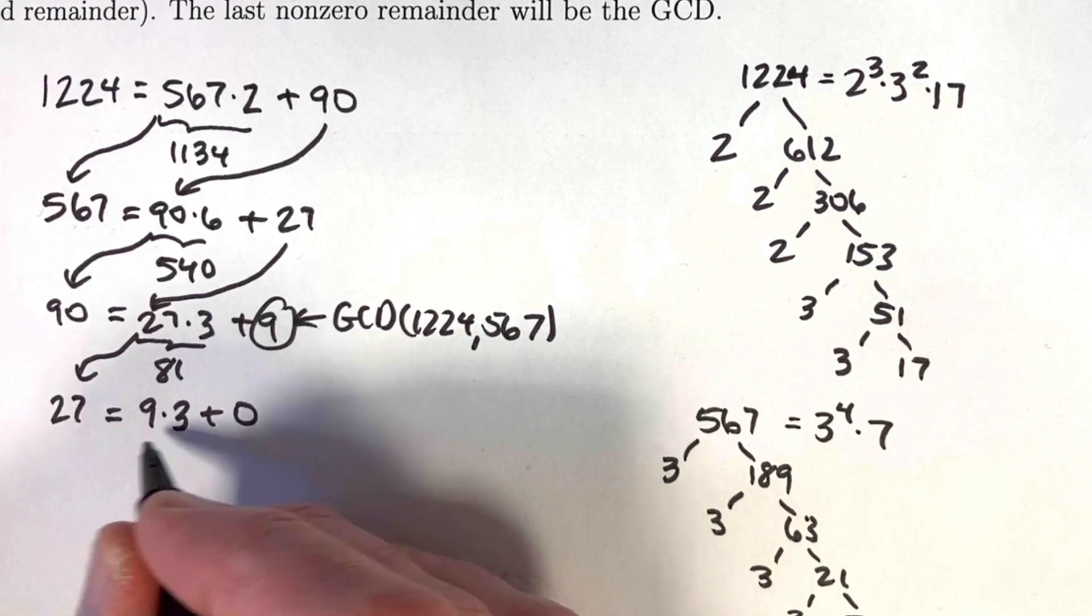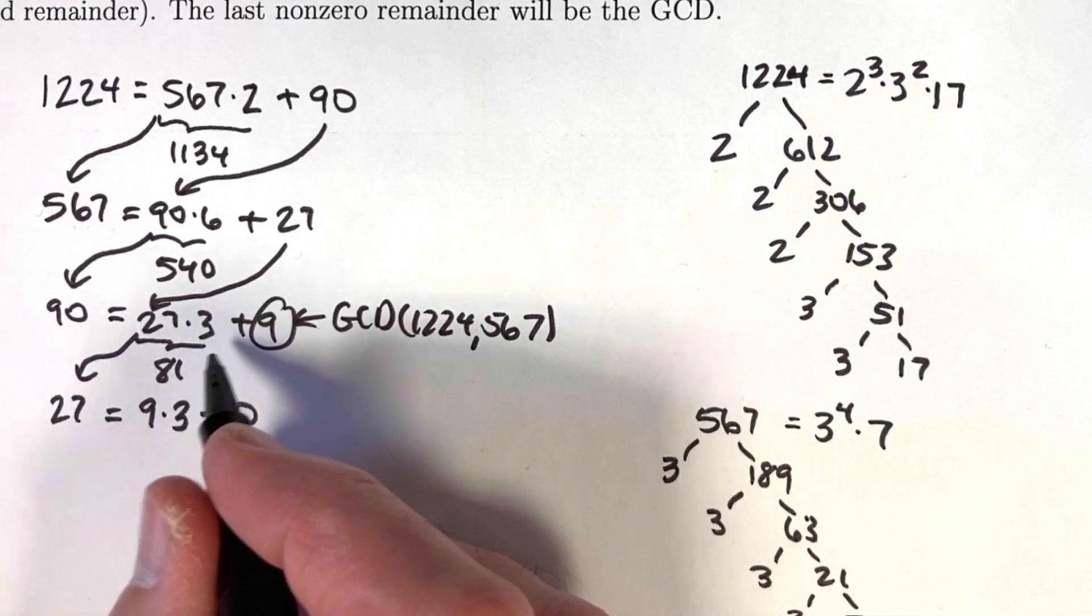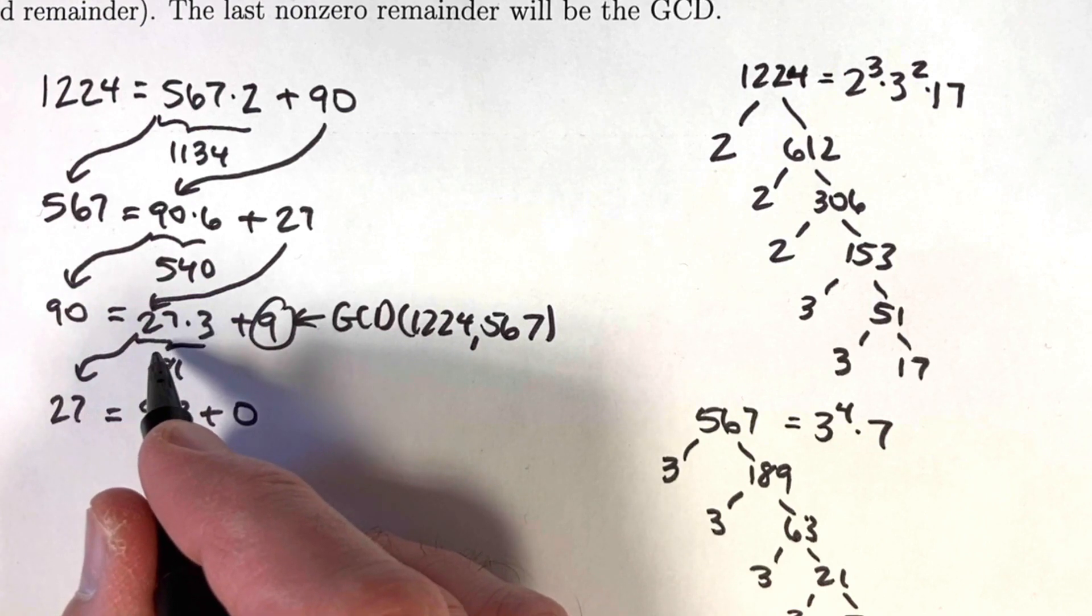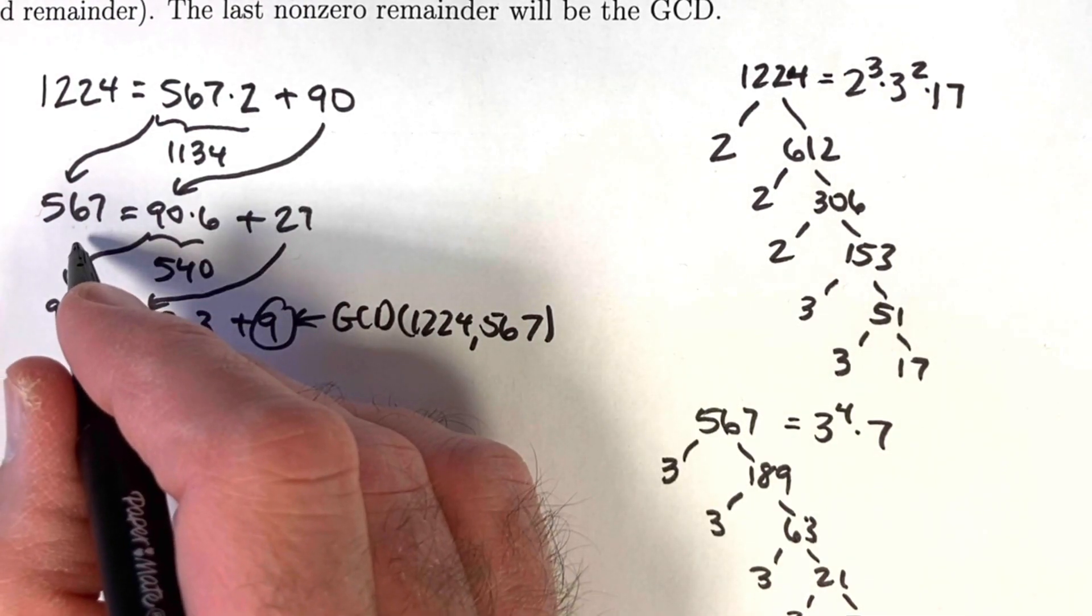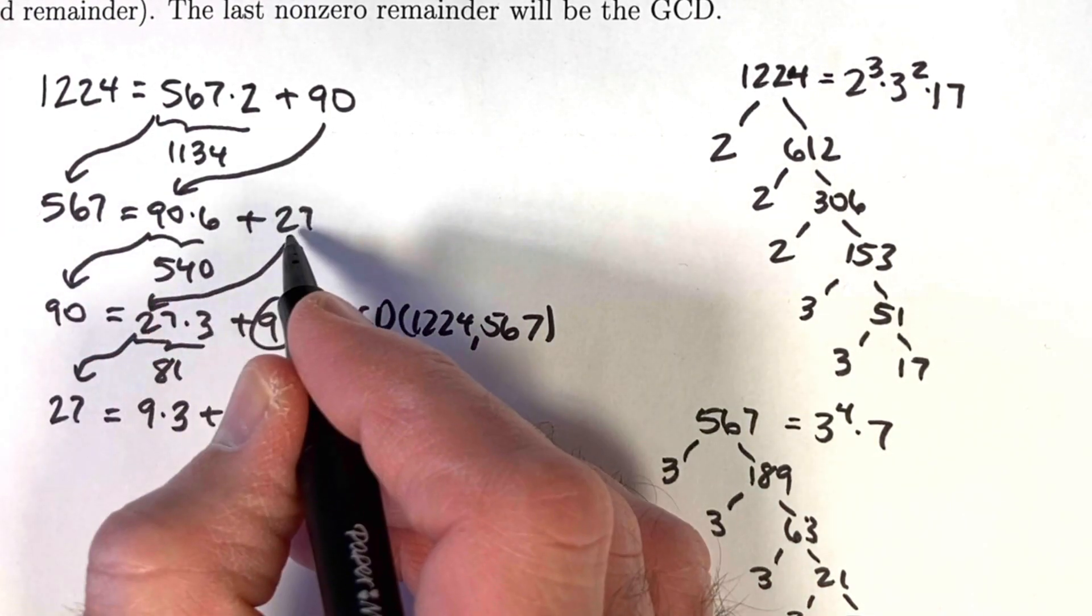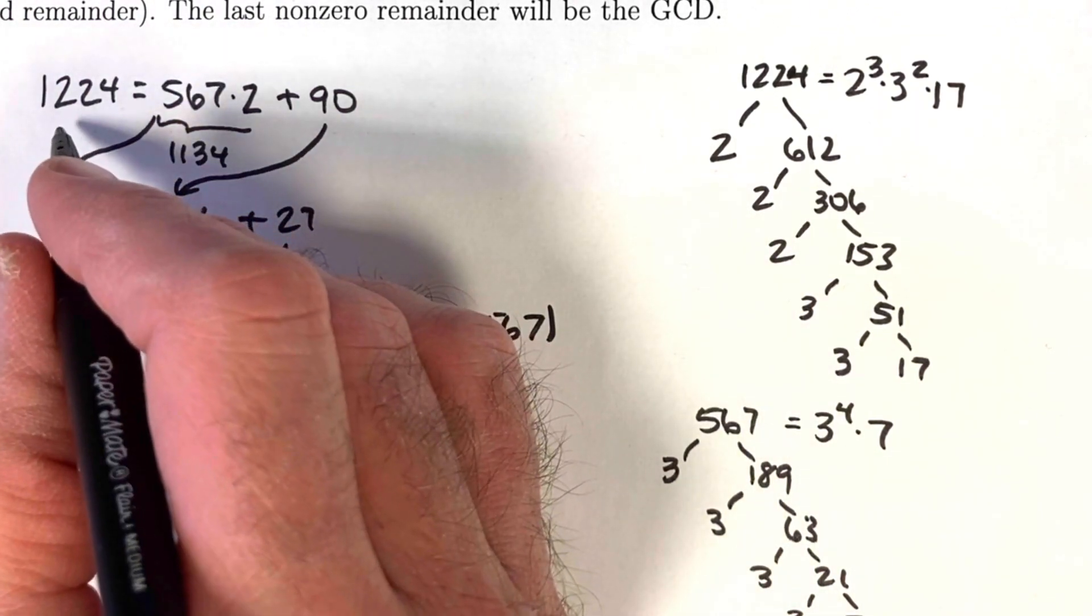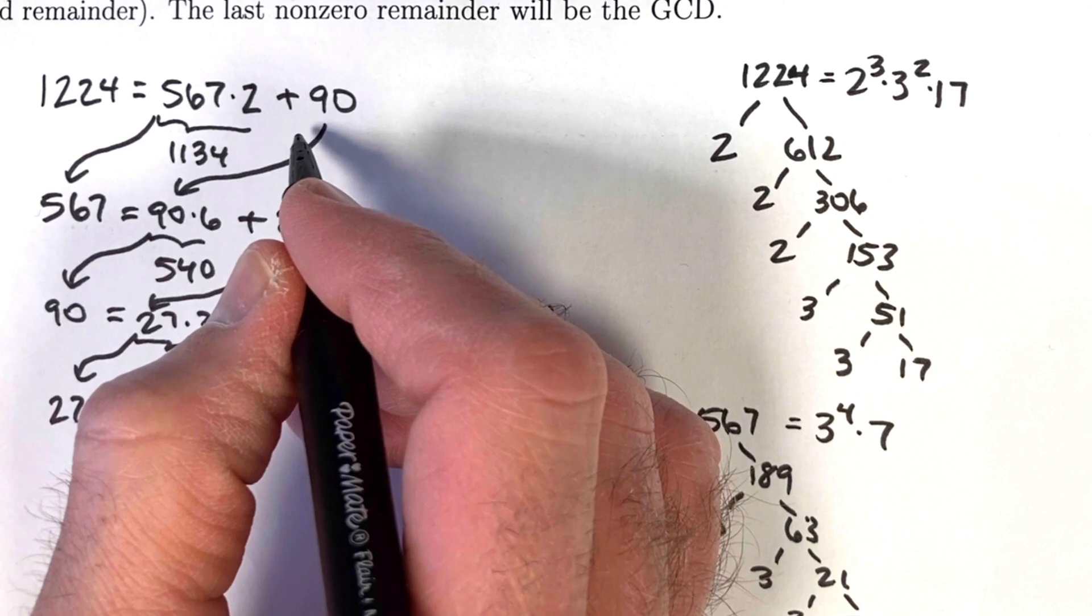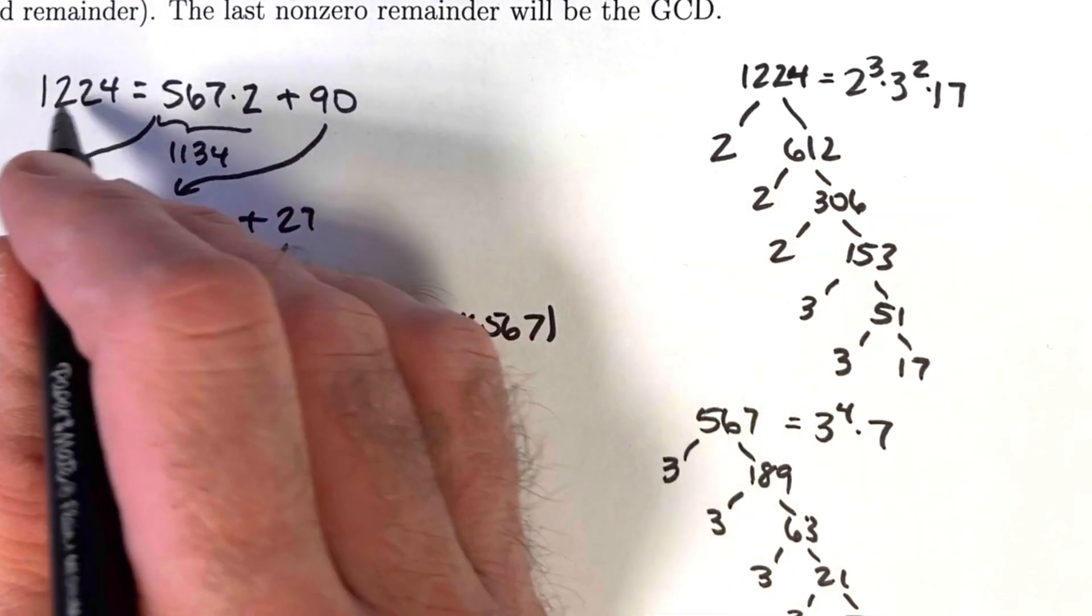27 is 9 times 3, so 9 divides 27. 9 also divides 90 because 9 divides both 9 and 27. 9 also divides 567 because it divides 90 and 27. And finally, 9 divides 1224 because it divides 567 and 90. That's why 9 is a divisor of both of these numbers.